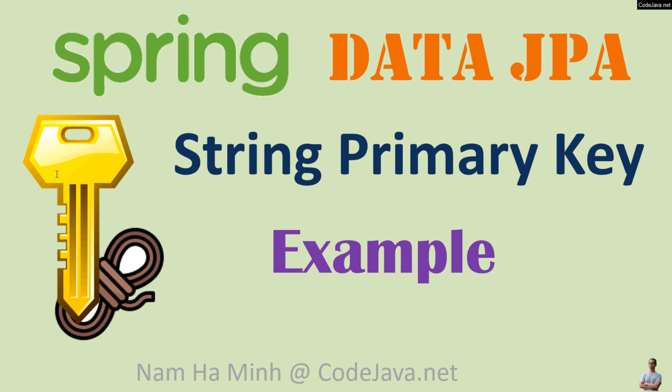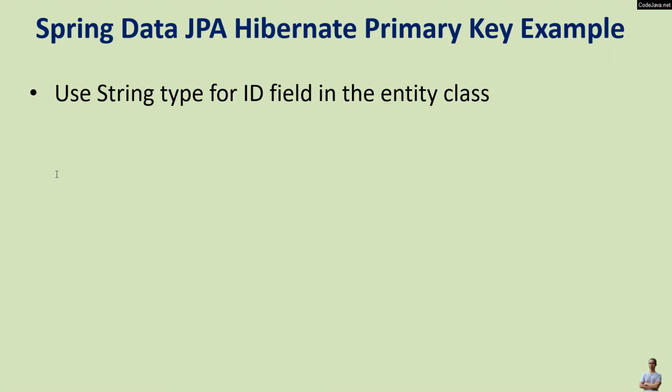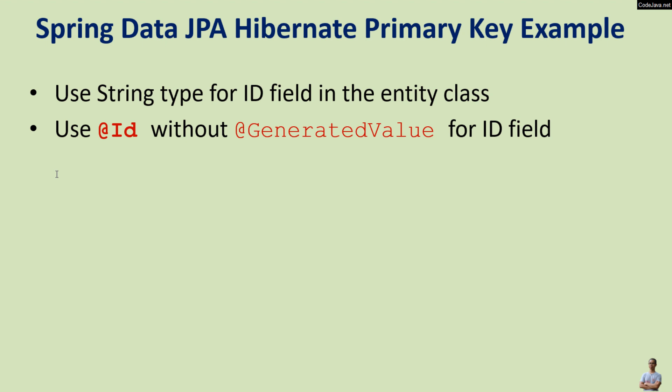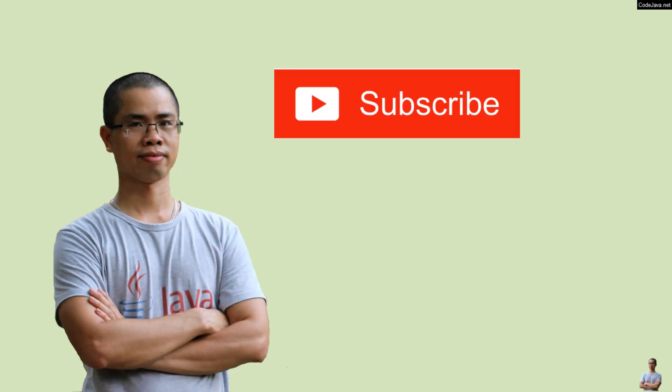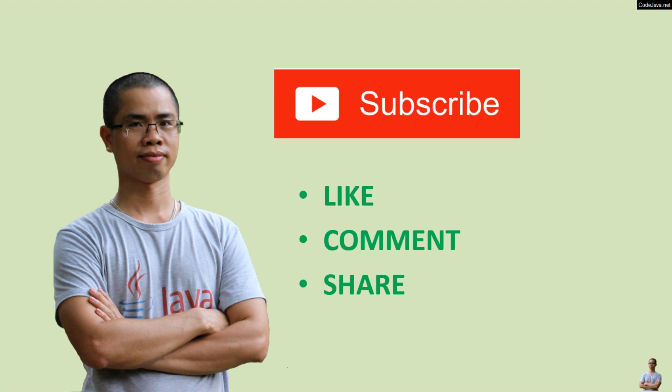So far I have shown you how to use a string primary key in Spring Data JPA. We use String type for the ID field in the entity class that maps to the string primary key column in the corresponding table. We use the @Id annotation without the @GeneratedValue annotation for the ID field, and we use String type for the ID in the repository interface. I hope you found this video helpful — please subscribe, like, comment, and share. Thanks for watching.